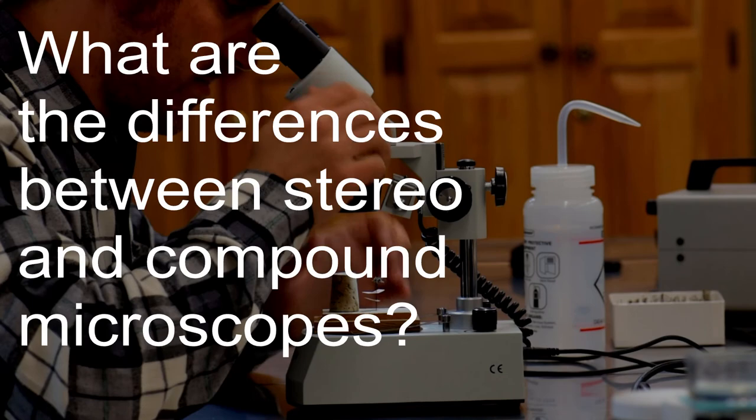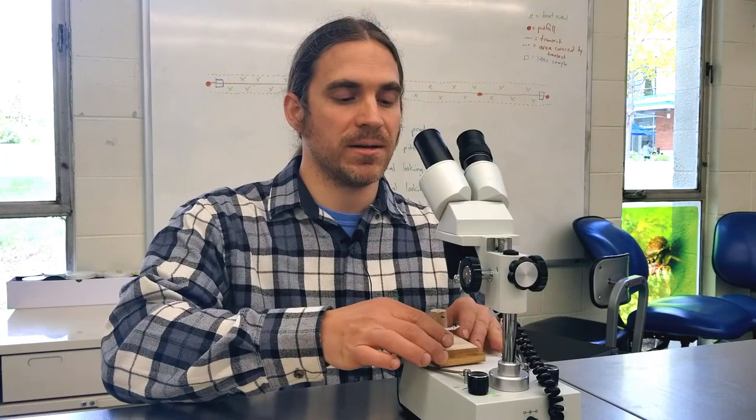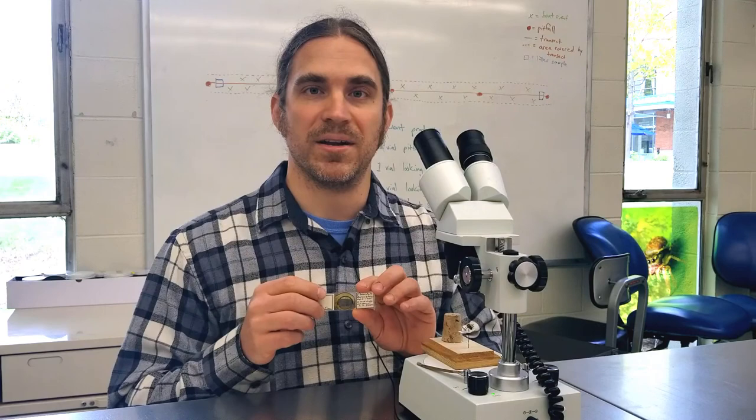There are a variety of different types of microscopes. The type we have here is a stereomicroscope, which is used to view larger or entire objects, like this bee here. Other types you might be familiar with include compound microscopes, which are used to view things like slide-mounted insects and other slide-mounted objects.